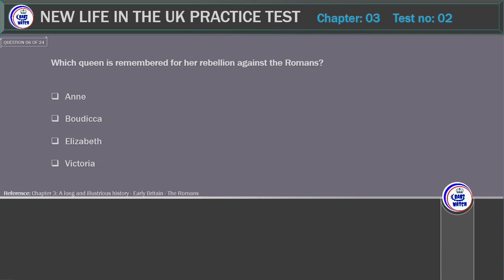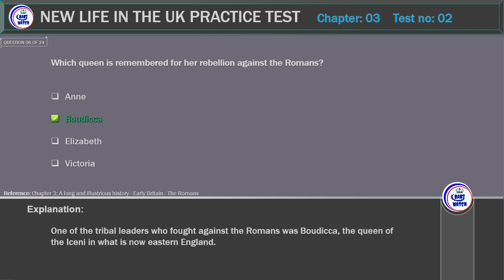Which Queen is remembered for her rebellion against the Romans? Options: Anne, Boudicca, Elizabeth, Victoria. Correct answer: Boudicca. Explanation: One of the tribal leaders who fought against the Romans was Boudicca, the Queen of the Iceni in what is now Eastern England.